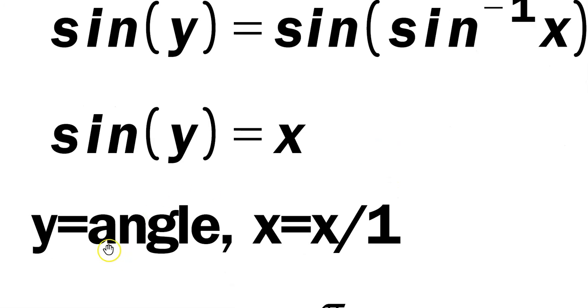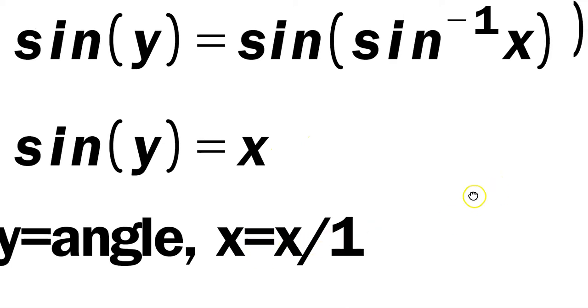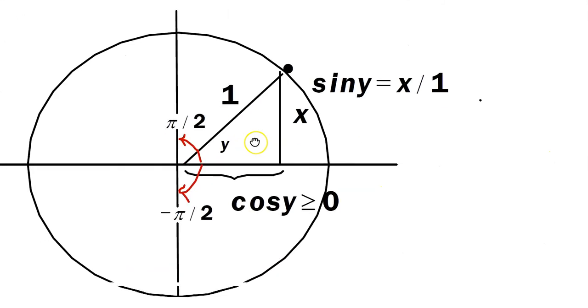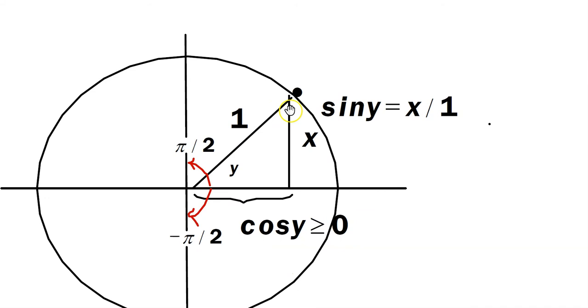Now remember something here. The y that you see is an angle. And when it says x, what we really mean is, of course, x over 1. Why is that important to know? Because now look at this unit circle picture here. Let me zoom back out a little bit. So you have a vertical leg for a triangle. You have a horizontal leg. And then this is 1.